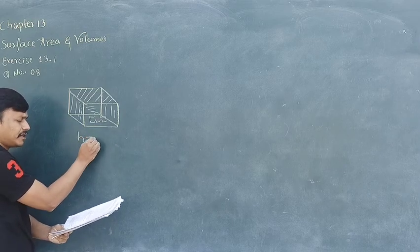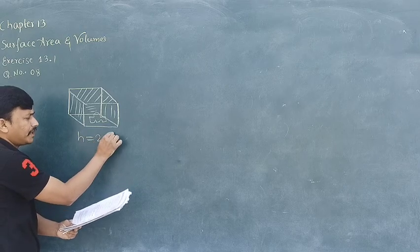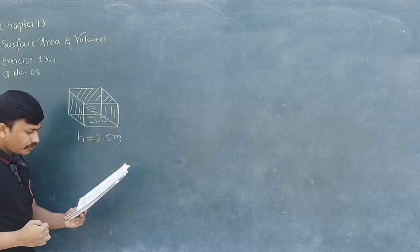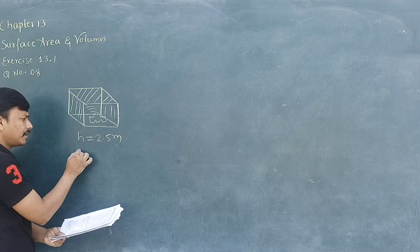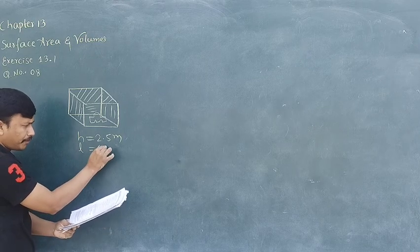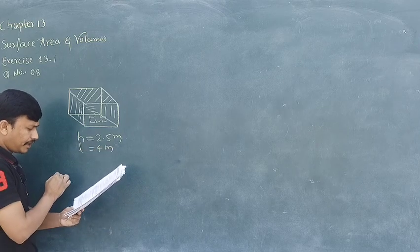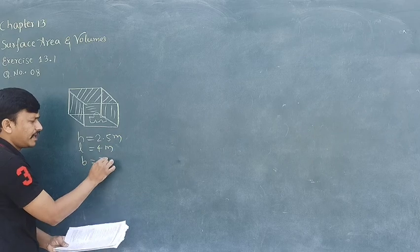What is the height of the shelter? 2.5 meter. With the base dimension, length is 4 meter and the breadth is 3 meter.